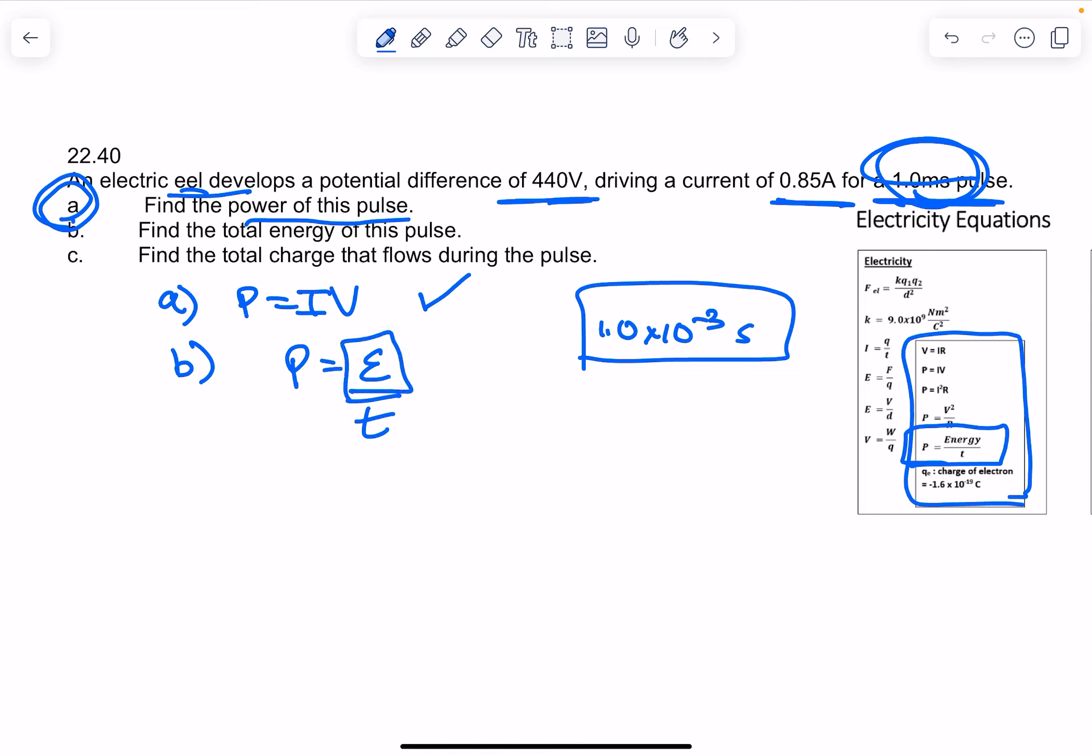Question c, what's it asking? Find the total charge. Now for charge, if you note here, charge is going to be this equation: I equals q over t, where I is the current.